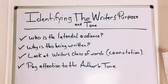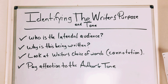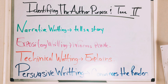To identify the writer's purpose and tone, keep in mind: who is the intended audience, and why is this being written? Look at the writer's choice of words — called connotation — which reflects the feelings and emotions the author wants the reader to sense. Look out for the author's tone: are they using angry words, nice words? Are they showing any biases or stereotypes? There are different types of writing: narrative tells a story — like a novel, book, or play.